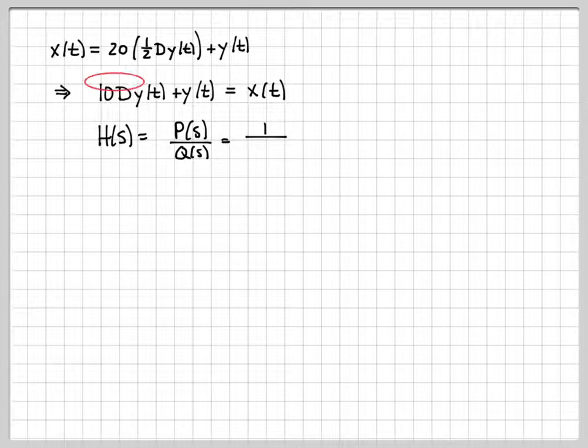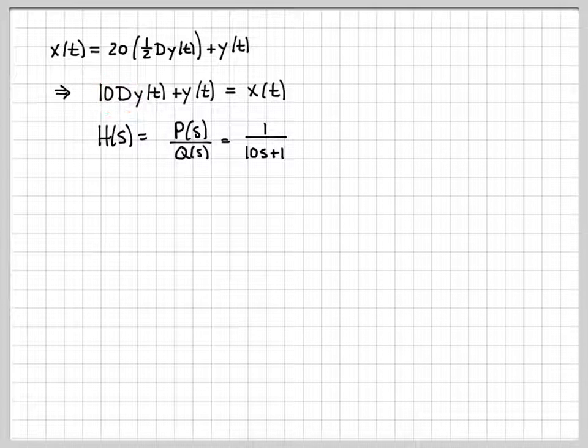And then Q(s) is the polynomial over on this side, so that is 10s + 1. Remember, you replace the Ds with Ss and then you pick off the polynomial that describes that S polynomial. So this is the transfer function. The transfer function for that circuit we were just looking at is 1/(10s + 1).